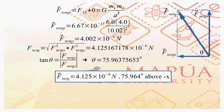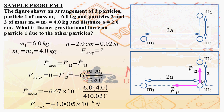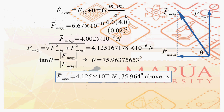Here a is the distance between m1 and m2, so r equals a and r squared is a squared. Therefore F_net_g_y equals G times m1 times m2 over a squared. Once again we know all the quantities involved. We calculate F_net_g_y to be 4.002 times 10 to the negative 6 newtons.